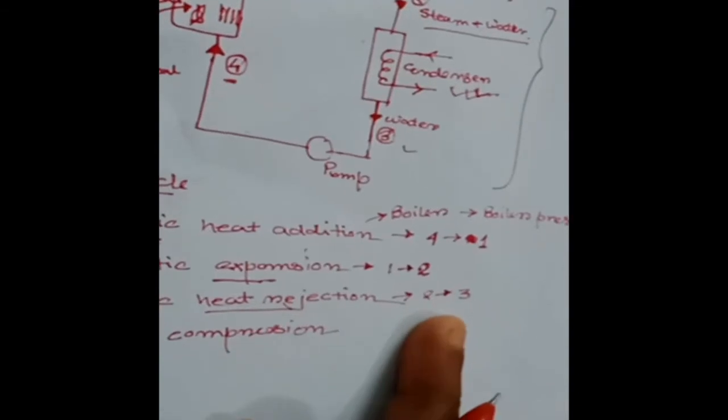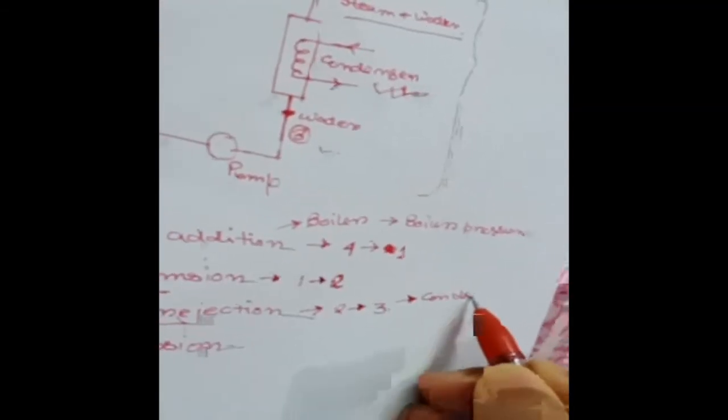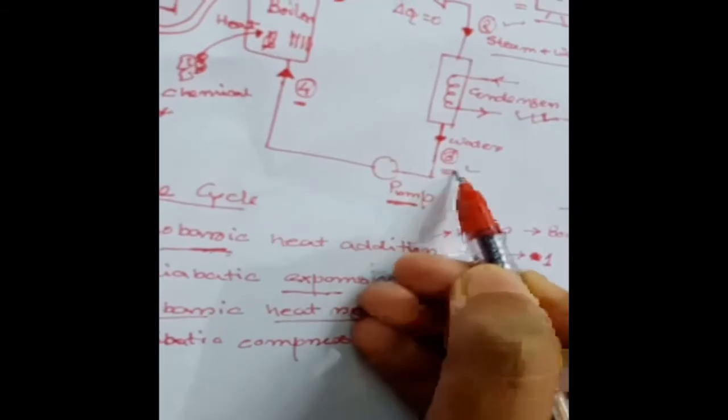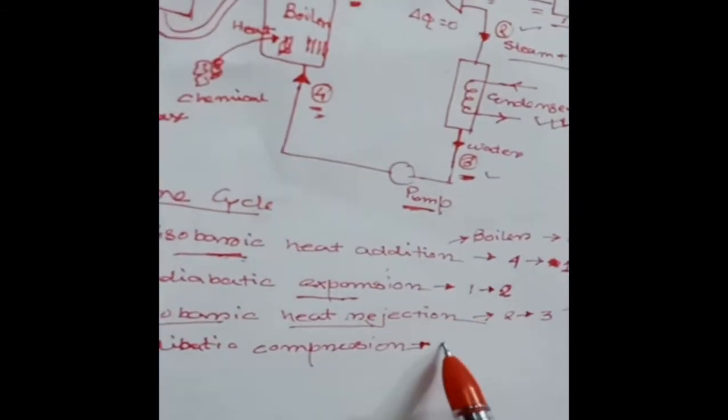Reversible isobaric heat rejection takes place in the condenser between steps two to three. In this step also, the pressure remains constant, and this pressure is known as condenser pressure. Then reversible adiabatic compression takes place in the pump from step three to four. The pump increases the pressure by means of compression. In this process also, neither pressure nor temperature remains constant.